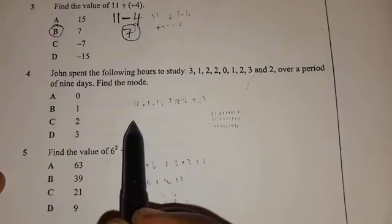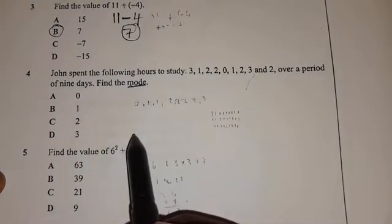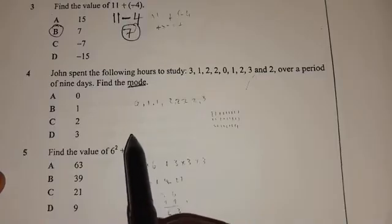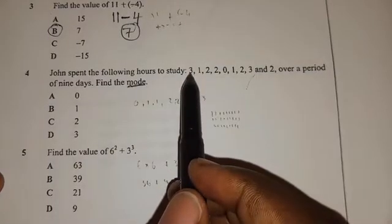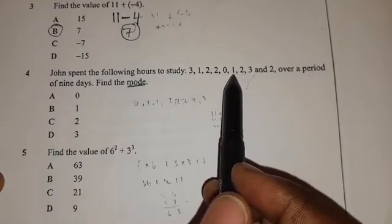So for you to answer this question, you need to understand what the mode is. The mode is the most appearing number or the most frequent number. So let's look at three. How many threes do we have? We have one, two. We have two threes.